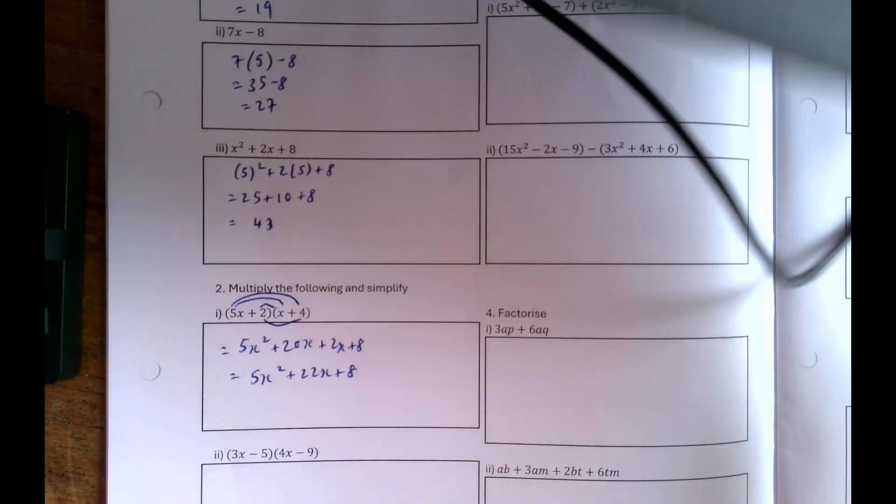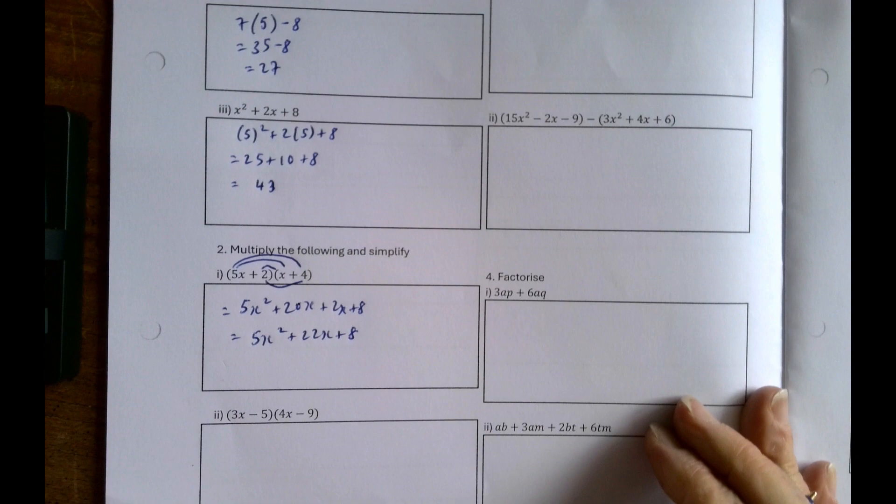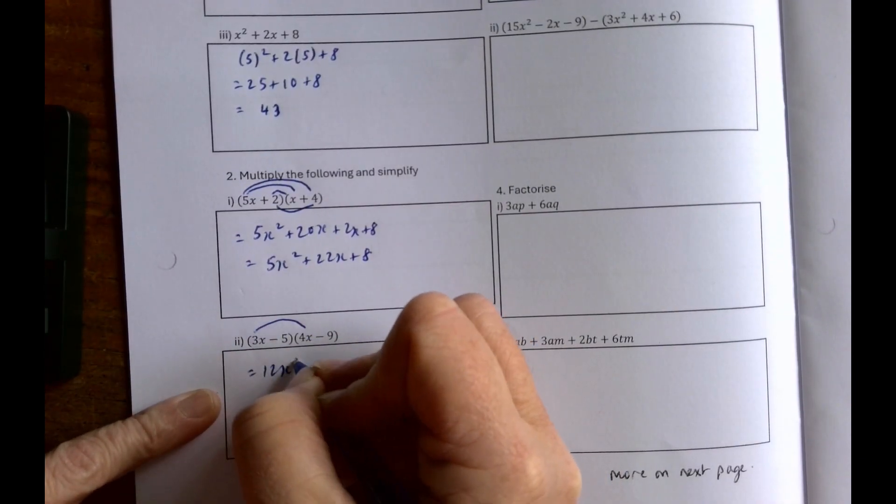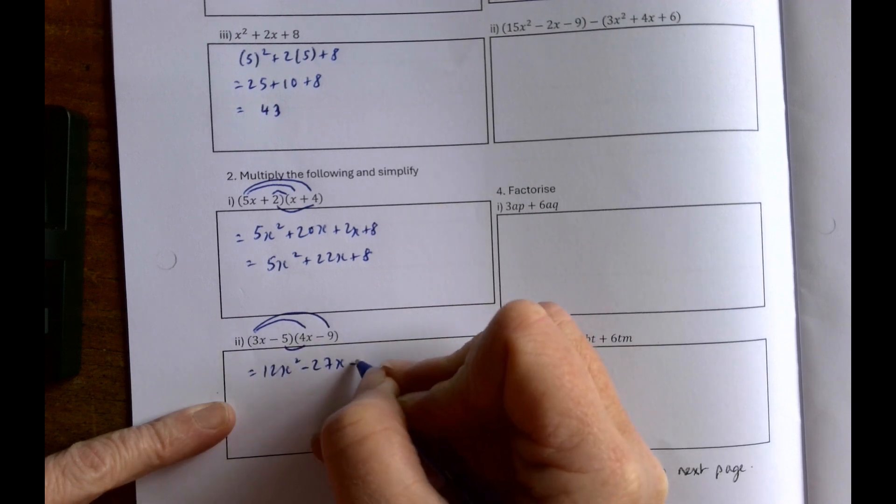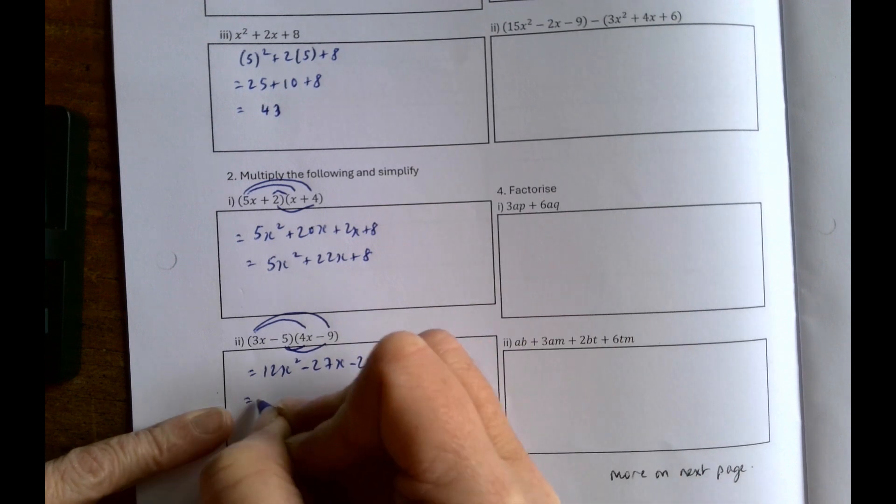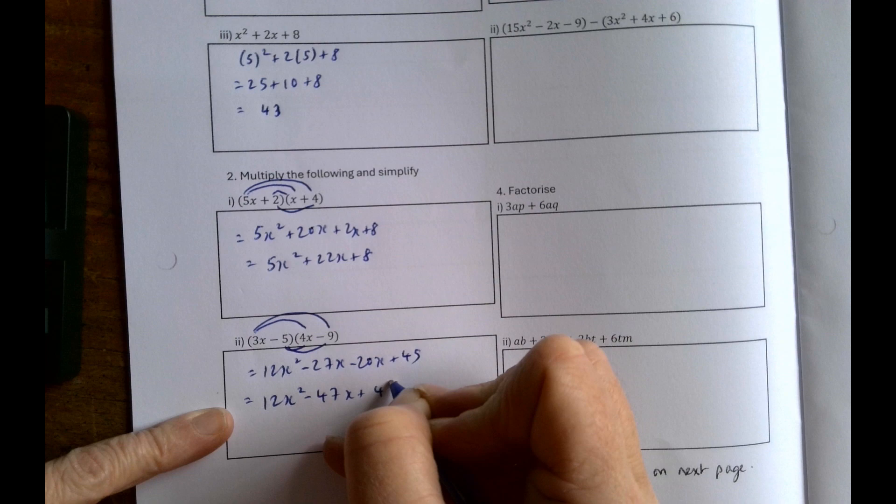And the next one. 3x by 4x is 12x squared. 3x by minus 9 is minus 27x, minus 5 by 4x is minus 20x, and then plus 45. So 12x squared minus 47x plus 45.